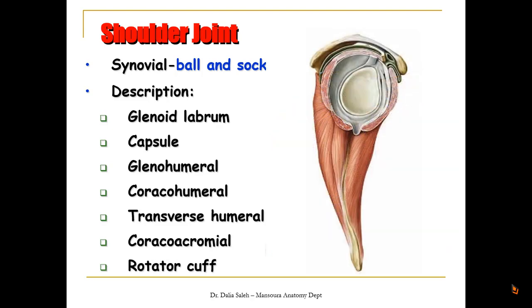There is also close proximity of the tendons of the rotator cuff muscles that insert at the upper end of the humerus. These tendons surround the shoulder joint from the anterior, superior, and posterior aspects, thus helping in its support and protection. The most important factors to remember are the lax and thin capsule that allows free movement, and the tendons of the rotator cuff muscles as the main factor supporting the shoulder joint.